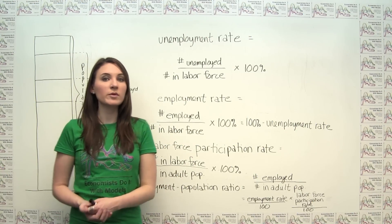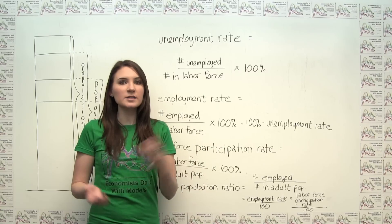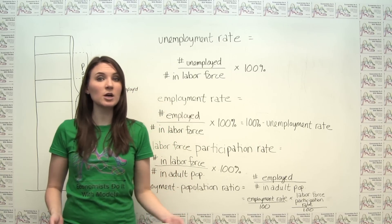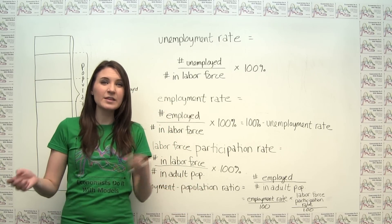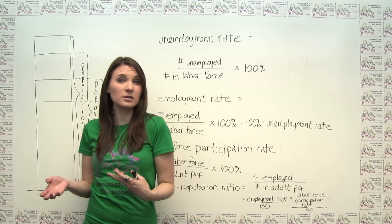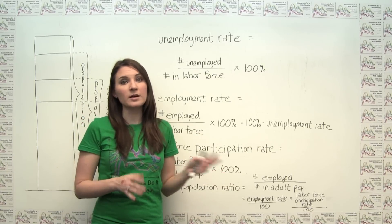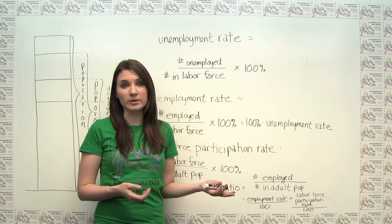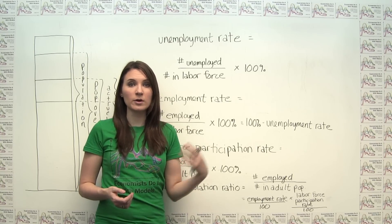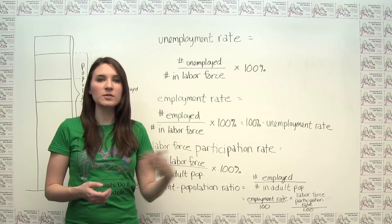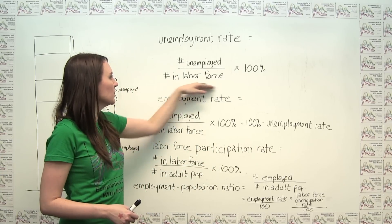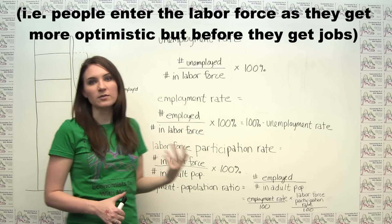Because the unemployment rate is measured as a percentage of the labor force, an individual is not technically counted as unemployed if she has gotten frustrated with looking for a job and has given up on trying to find work. These discouraged workers would, however, probably take a job if it came along, which implies that the official unemployment rate understates the true rate of unemployment. This phenomenon also leads to counterintuitive situations where the number of employed people and the number of unemployed people can move in the same rather than opposite directions, because of changes over time in those counting themselves as members of the labor force.